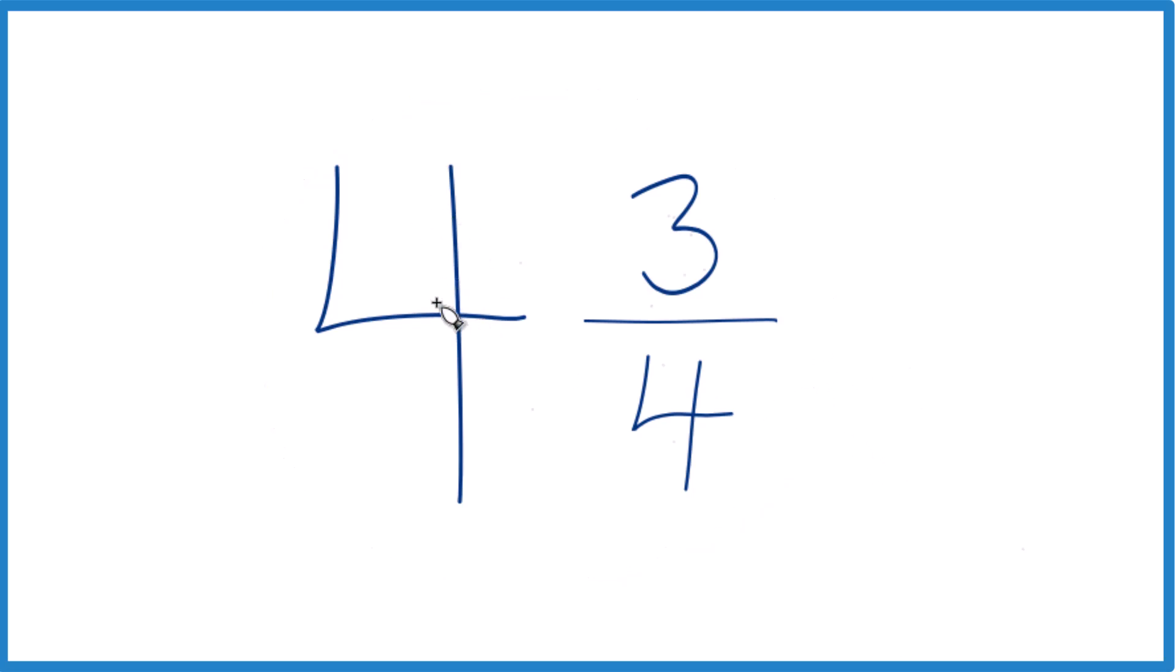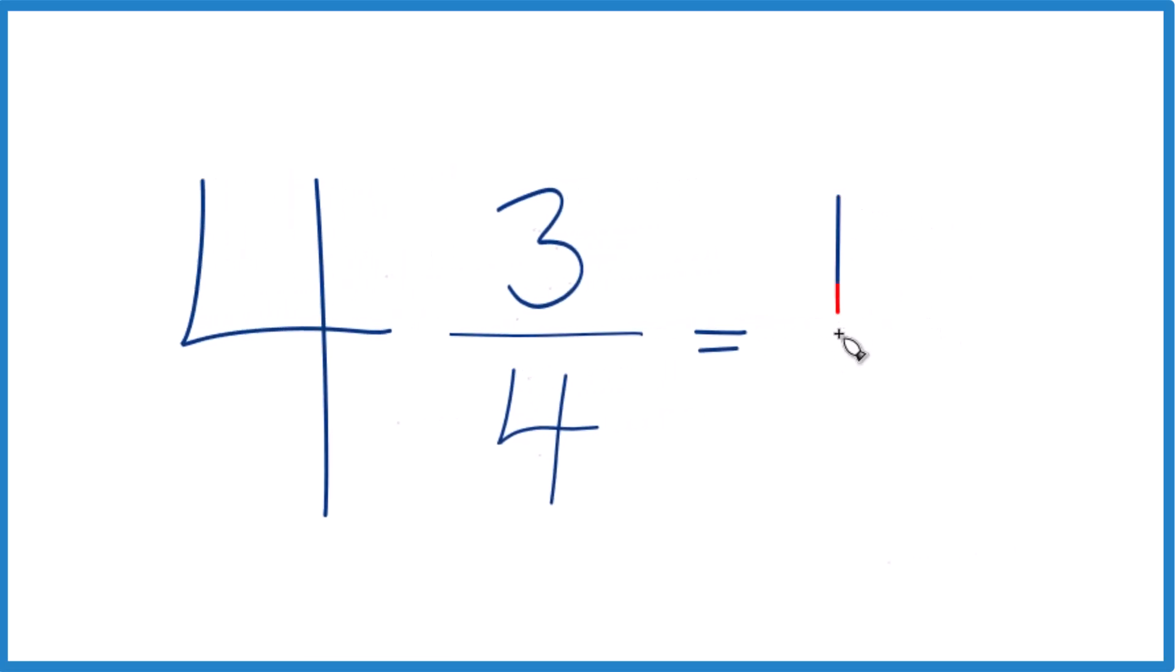You take the whole number, 4 times 4, that's 16, and you add it to 3. So 4 times 4 is 16, 16 plus 3, that's 19.